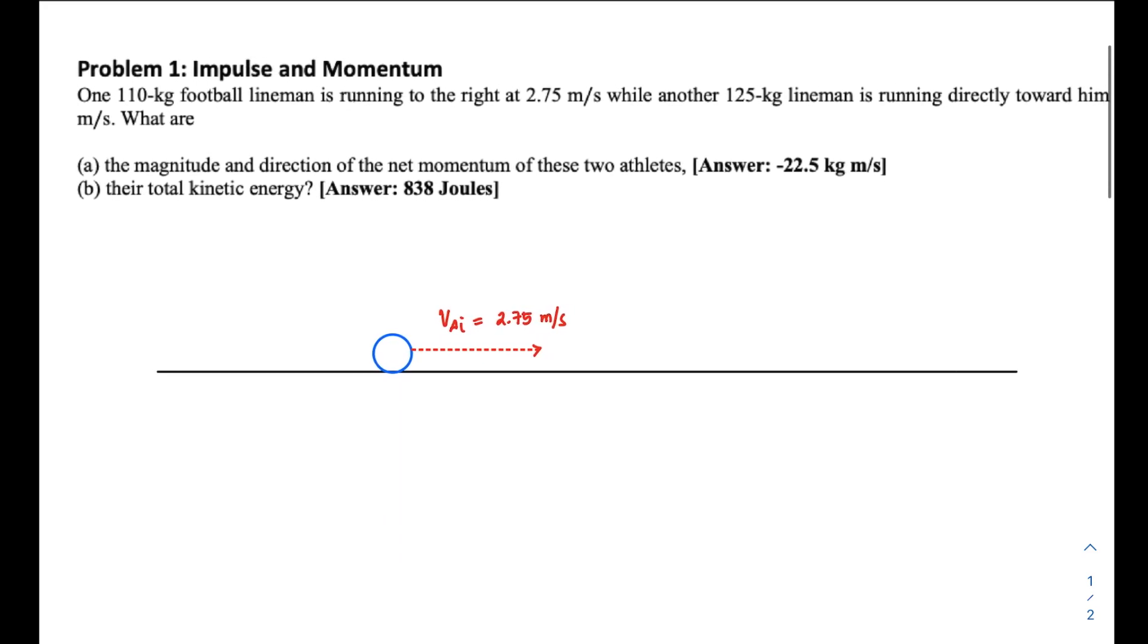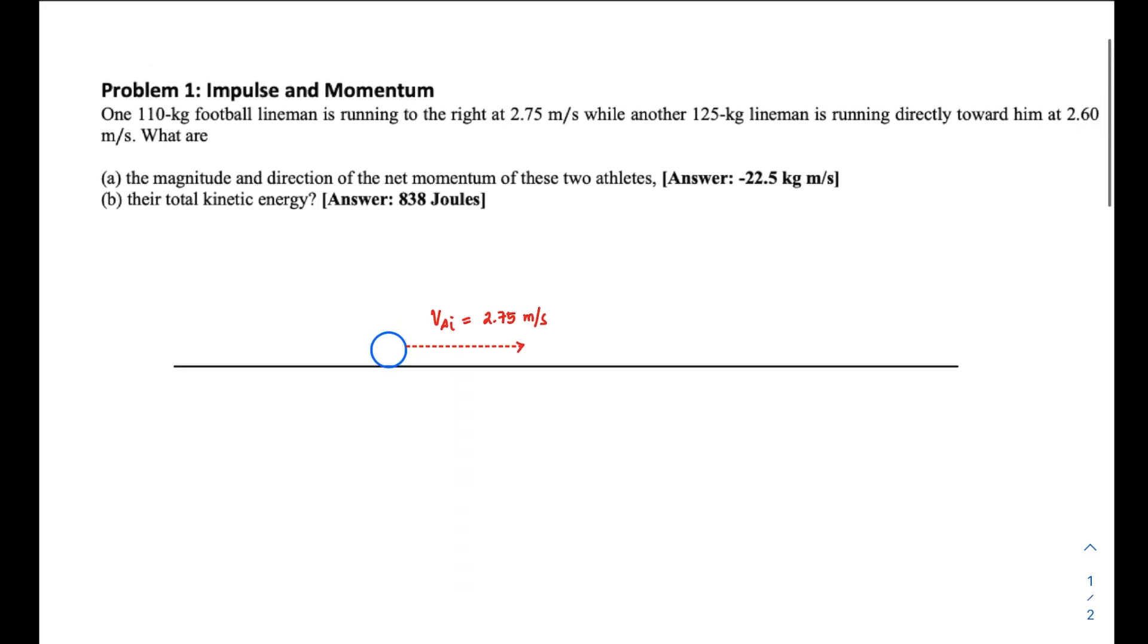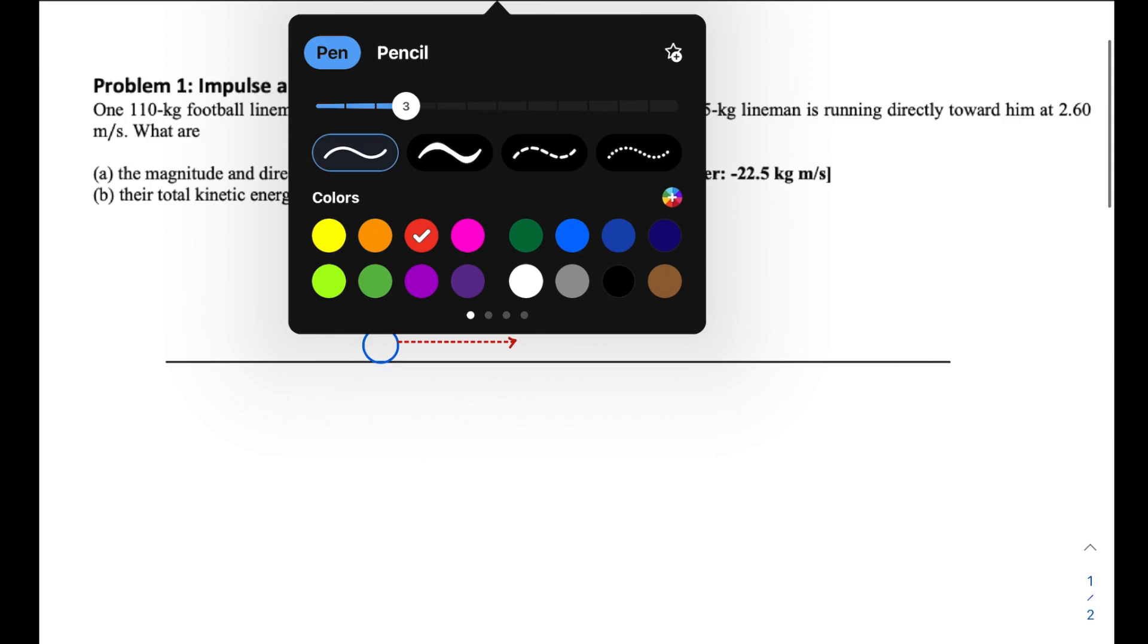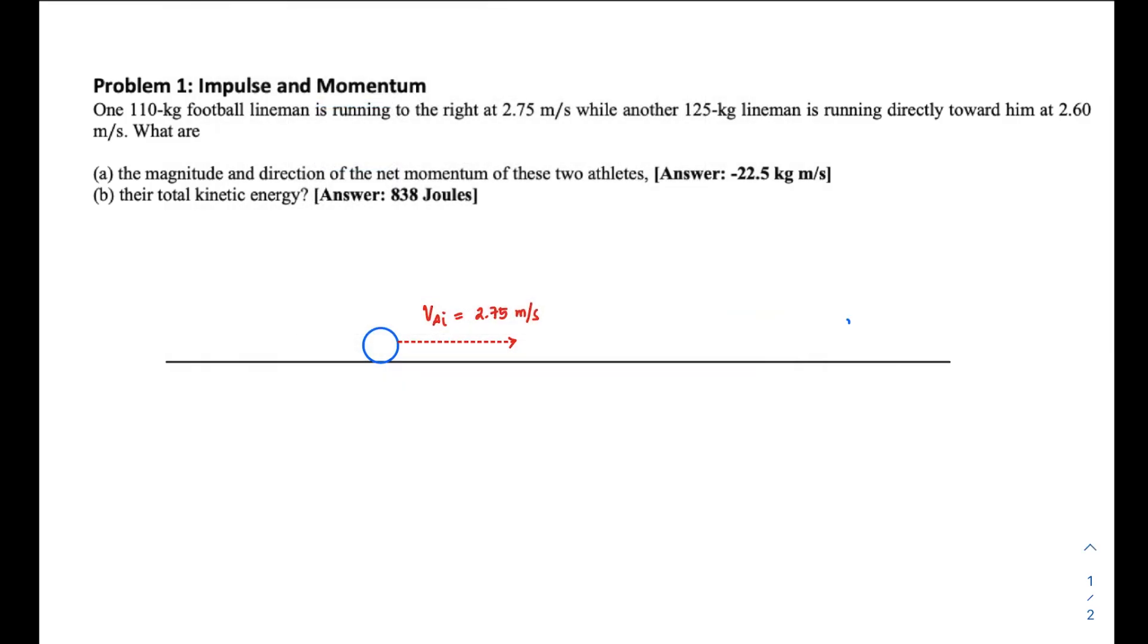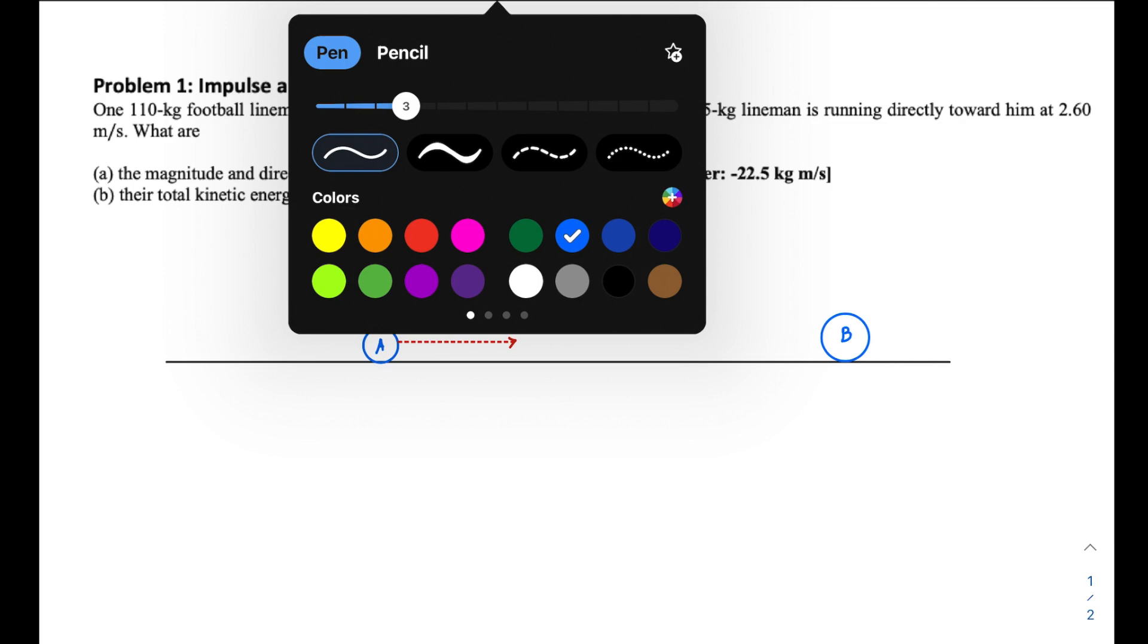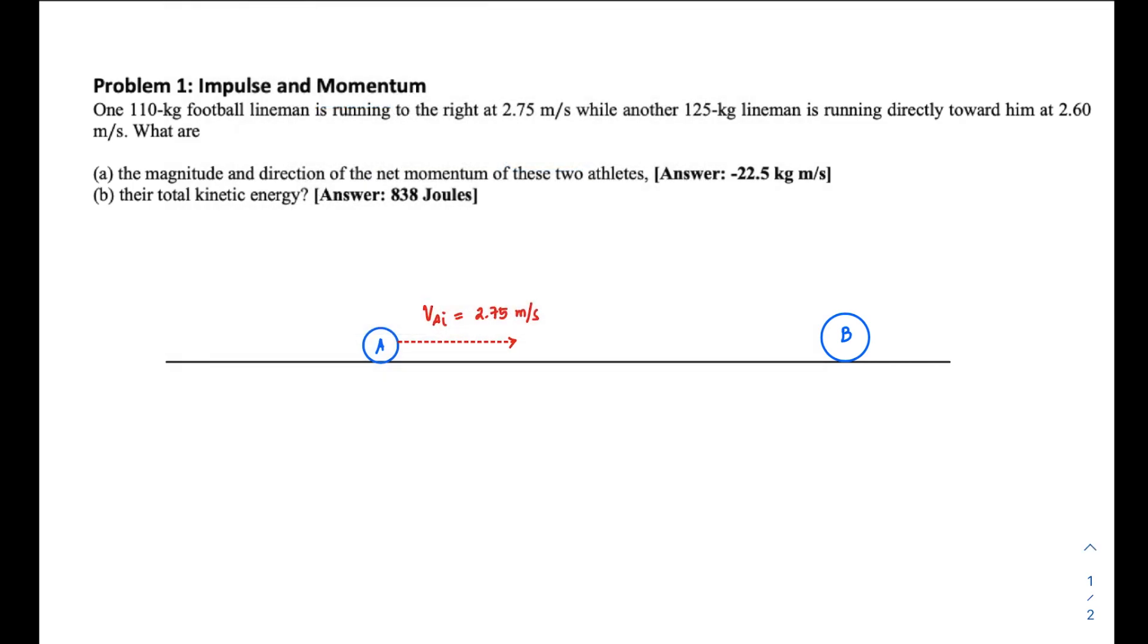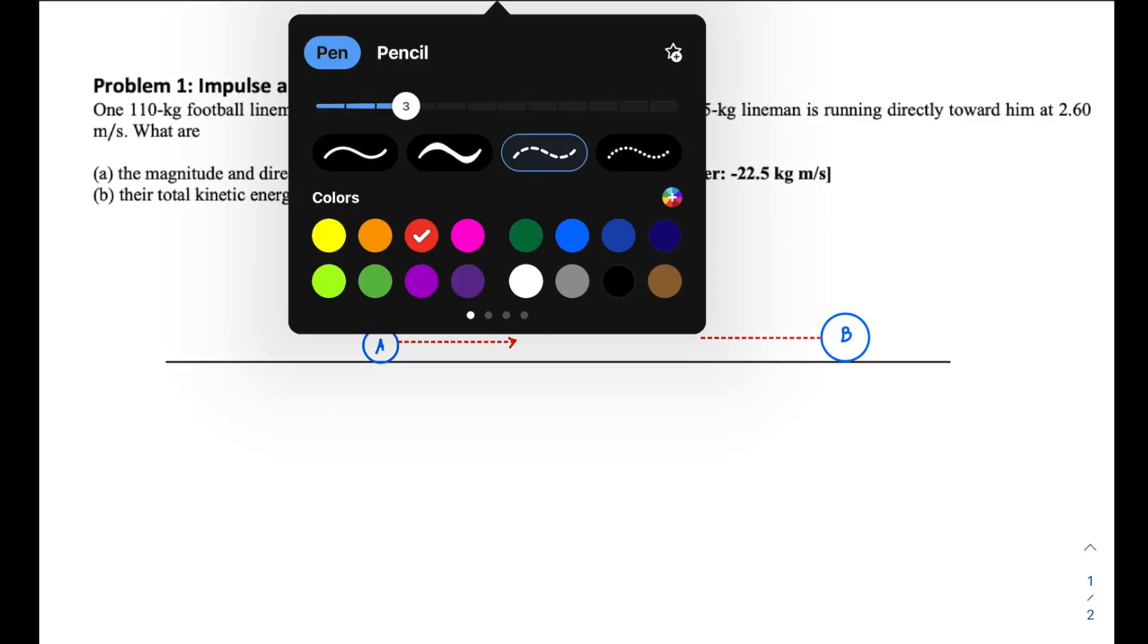more massive than the first. I'll sketch a bigger circle to indicate mass B. According to the problem, it's moving towards the first lineman at 2.60 m/s, so there will be a head-on collision. That represents the direction of the second lineman. This is v_B,i, the initial velocity of object B. In this